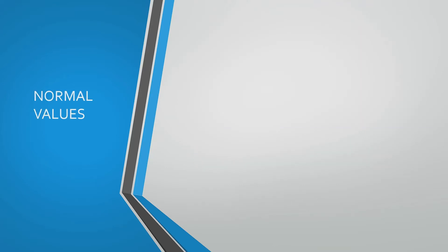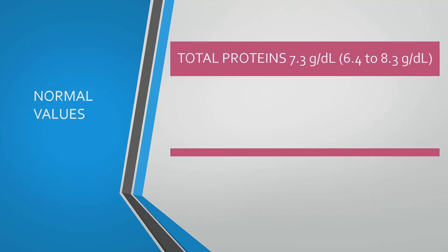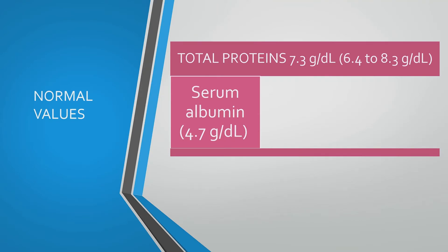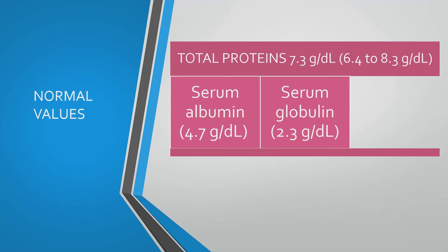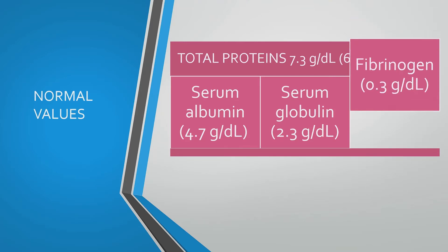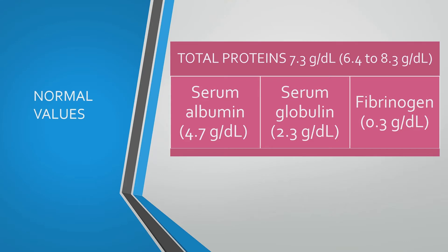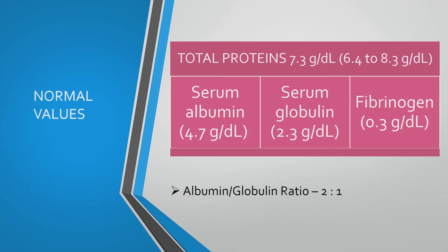Let's see the normal values of plasma proteins. The total amount of proteins present in the plasma is 7.3 gram per deciliter. Out of total proteins, serum albumin is 4.7 gram per deciliter, serum globulin is 2.3 gram per deciliter, and fibrinogen is 0.3 gram per deciliter. Lastly, the albumin to globulin ratio is 2 is to 1.